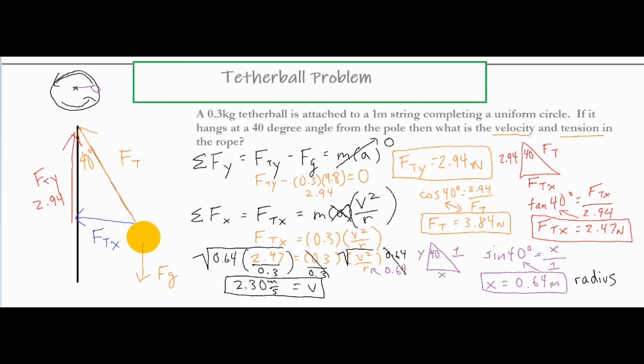The tricky part is setting up our two triangles. We have one triangle for forces to solve for anything with these two formulas that we created. And then in addition, we set up a triangle with distances so that we could find the x component and find the radius so that we can go ahead and finish this portion of the problem and solve for our velocity. I hope that was helpful in helping you understand and solve a tetherball problem.